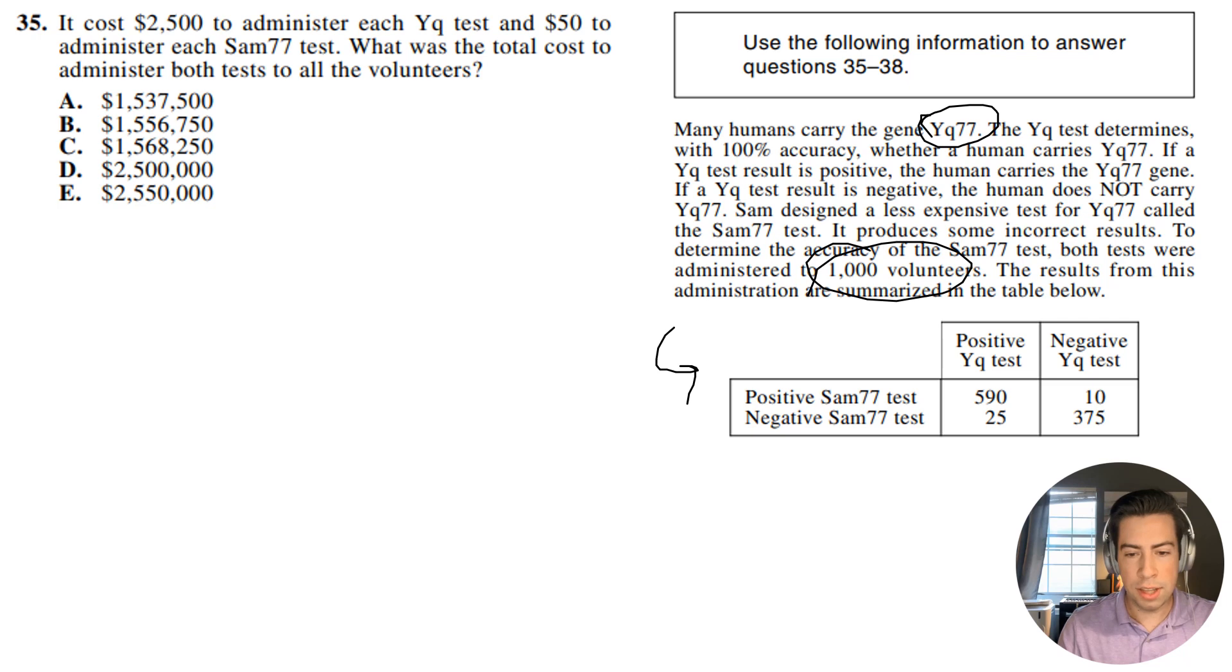All right guys, what this table is saying is there are 590 participants who tested positive using the YQ and the positive SAM77. So that means that this was a positive test. There's 25 participants who tested negative for the SAM77, but they tested positive, but they actually were positive. So this is a false negative. But right here, positive, I think you get the idea, right? You have a false negative here, a true negative, and then a false positive here.